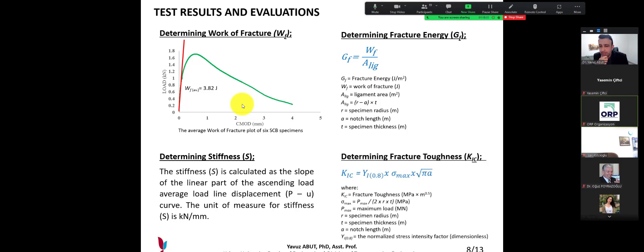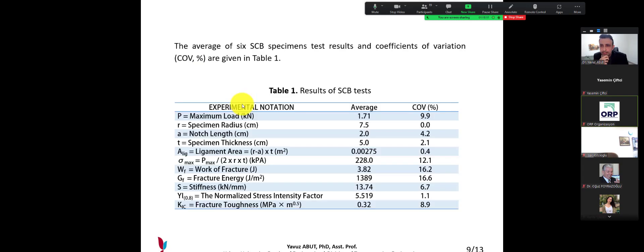And the last part, fracture toughness. Fracture toughness has more notations and you can see on the slide. Results of the SCB tests: I will not read all of the data, but some of the data is important. For instance, fracture toughness is here: megapascal times square root of meter. And average of the six specimens is 0.32 and coefficient of variation 8.9.